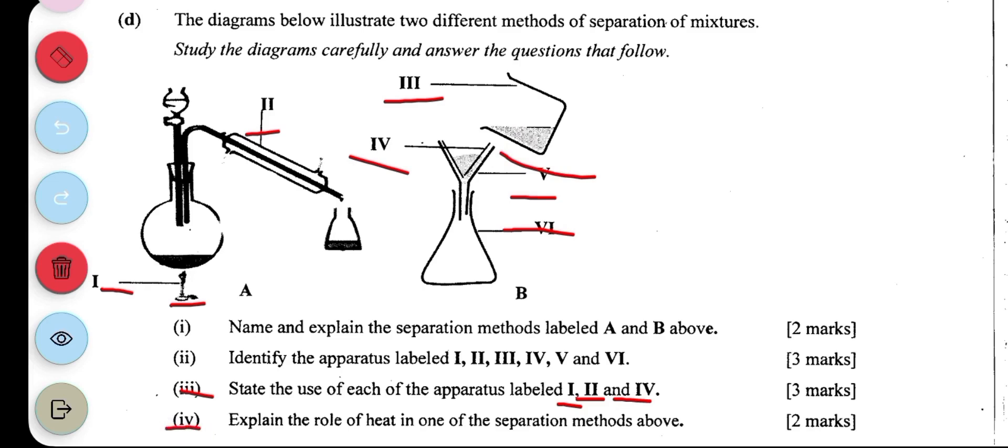Part IV says explain the role of heat in one of the separation methods. The heat is definitely used during distillation. During distillation, the mixture is first heated, resulting in vapor.